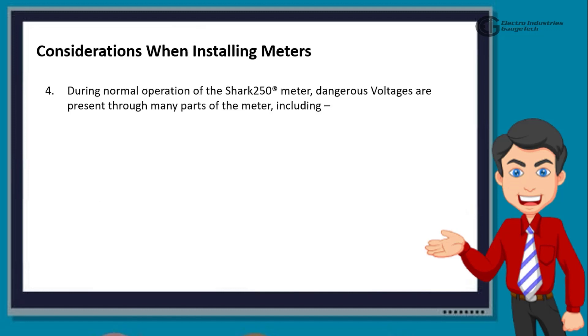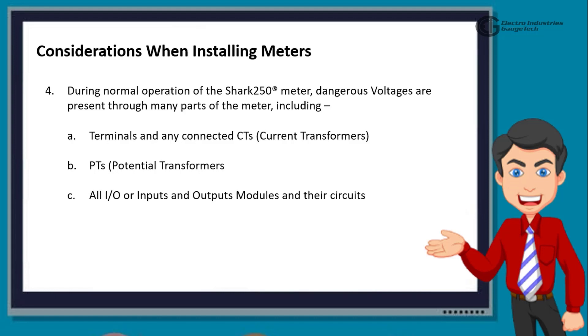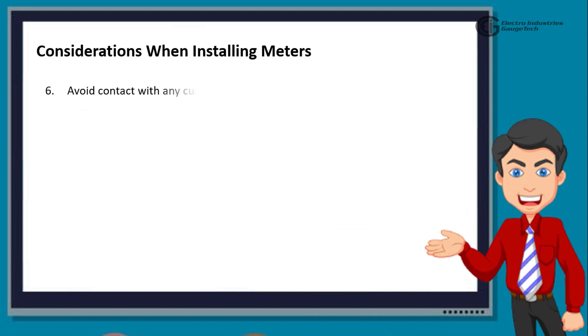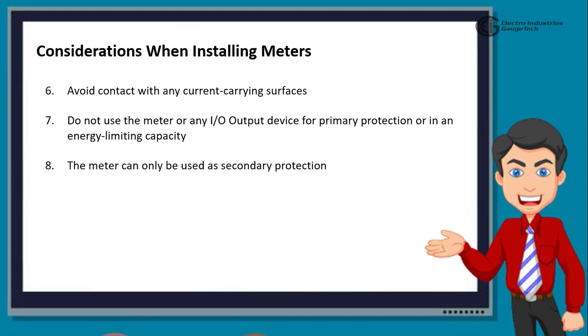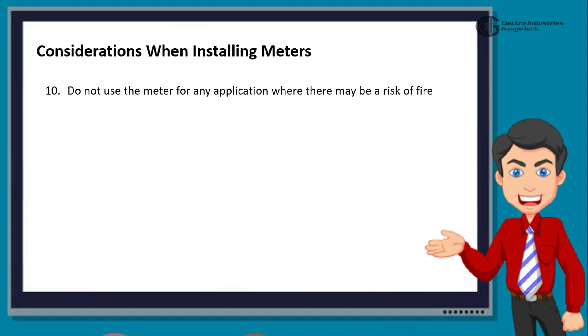During normal operation of the Shark 250 meter, dangerous voltages are present through many parts of the meter, including terminals and any connected CTs or current transformers, and PTs or potential transformers. All I/O inputs and outputs modules and their circuits. All primary and secondary circuits can, at times, produce lethal voltages and currents. Avoid contact with any current-carrying surfaces. Do not use the meter or any I/O output device for primary protection or in an energy-limiting capacity. The meter can only be used as secondary protection. Do not use the meter for applications where failure of the meter may cause harm or death. Do not use the meter for any application where there may be a risk of fire.